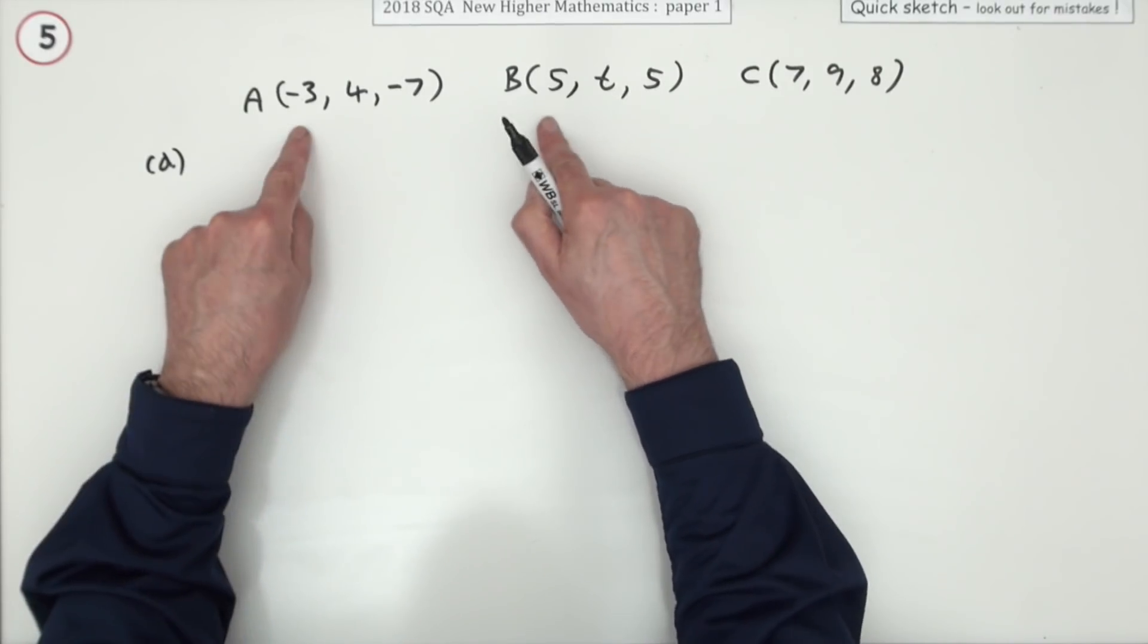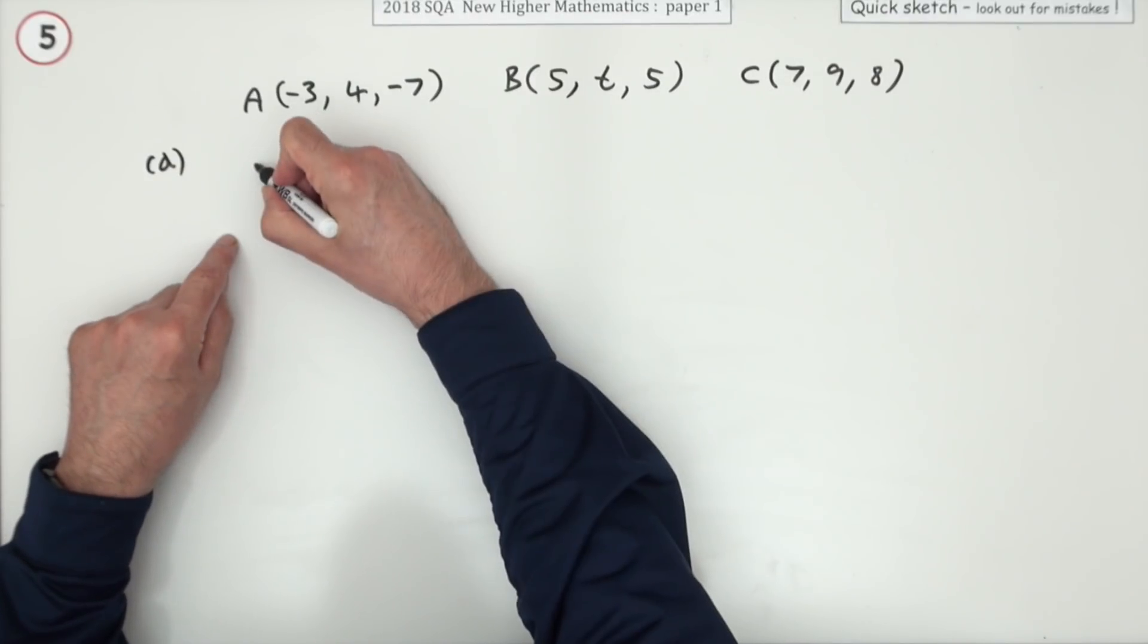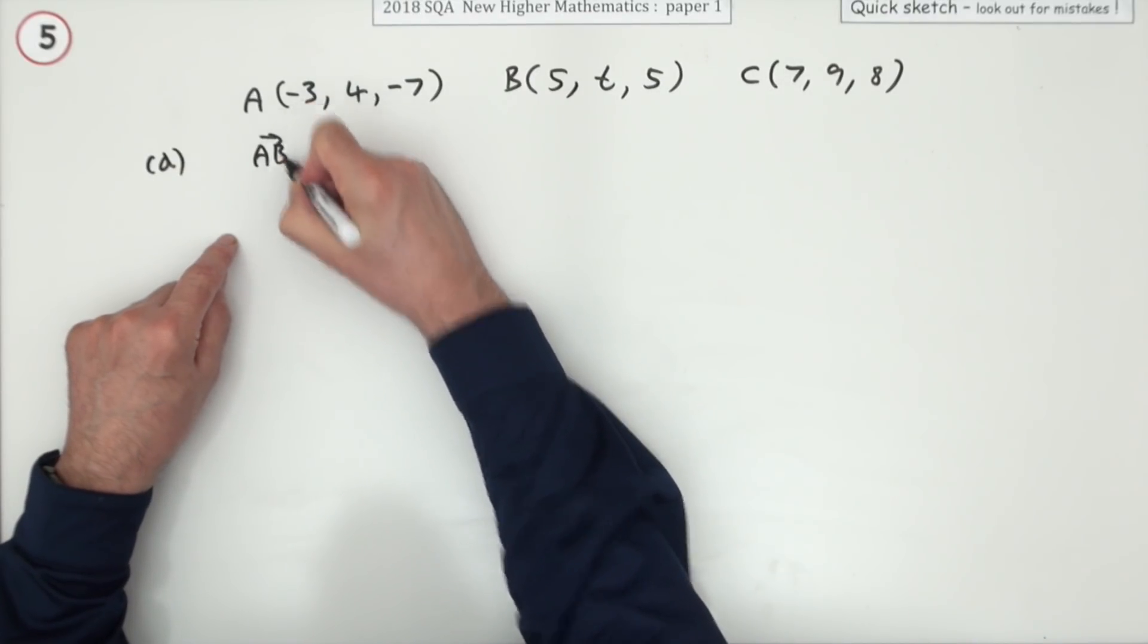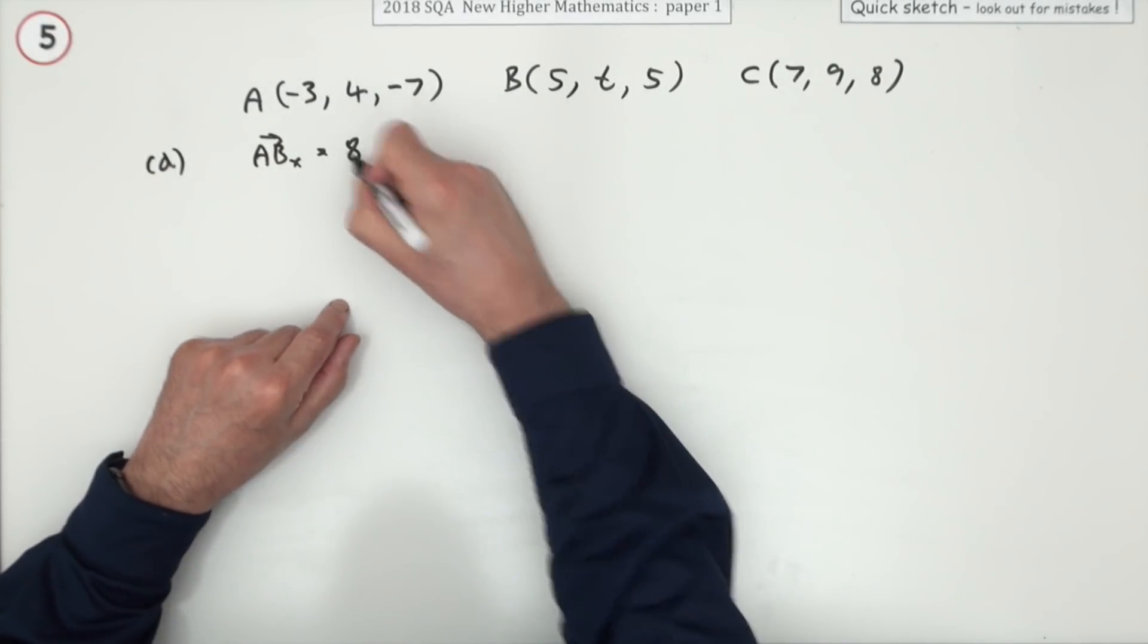If they are collinear, then each of those components must work independently. I'm just going to write this down though. Going from A to B, just taking the x-component, you're going from negative three to five, that's eight.